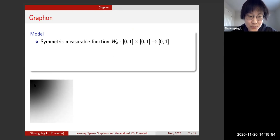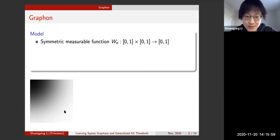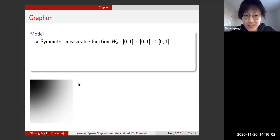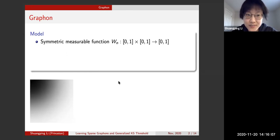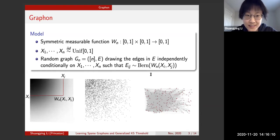This is a picture of a graphon: the darker regions indicate function values closer to one, and the lighter parts indicate values closer to zero. Starting from this graphon, you get a random graph model.